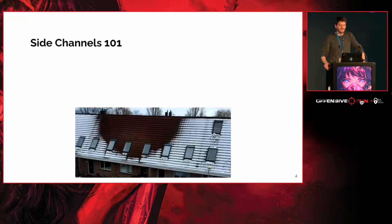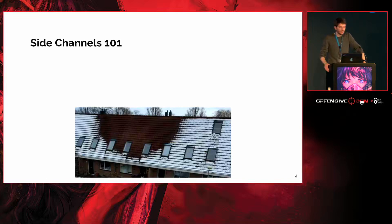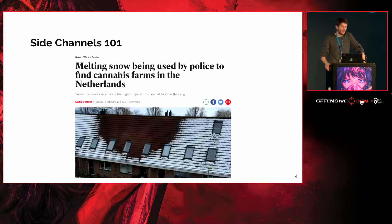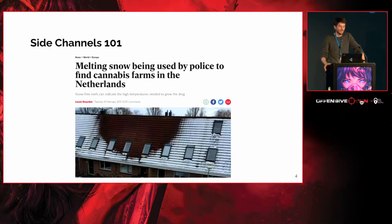Let's start with something funny. Just by looking at this image, you can see something is odd — we see a roof with melted snow. Just by walking on the street and seeing this is suspicious. We think this is a perfect example of a side channel, because here the Dutch police managed to find guys growing illegally weed in their apartment just by looking at the roof, since the high temperature was melting the snow.